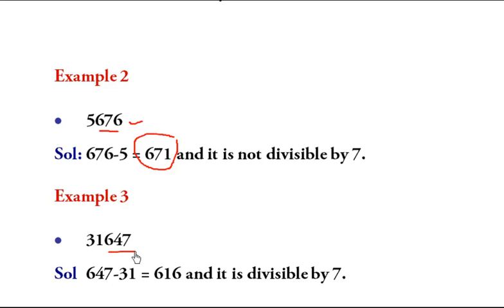In this case, the number 31647: the first group is 647 and the second group is 031. So 647 - 031 = 616. Let's check 616 by 7: seven eights are 56, leaving 56, so 616 is divisible by 7. Hence the complete number 31647 is divisible by 7.